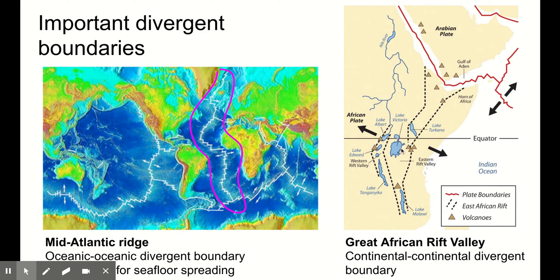In that rift valley, we see what we would expect — we see volcanoes, low volcanoes. We also see some giant lakes. The largest lakes in Africa are all formed in this rift valley. We see big chasms in the rift valley and water can collect in those chasms and form some of our largest lakes.